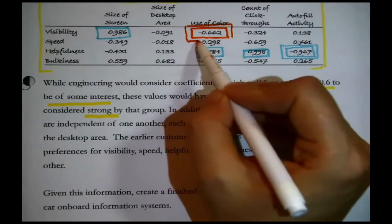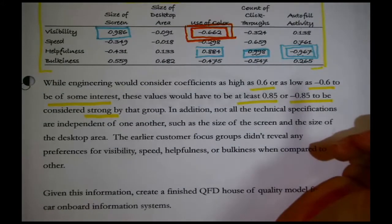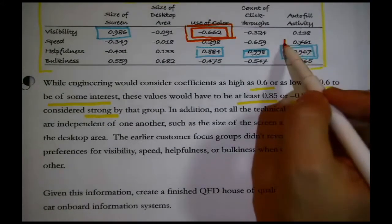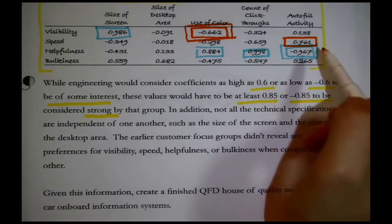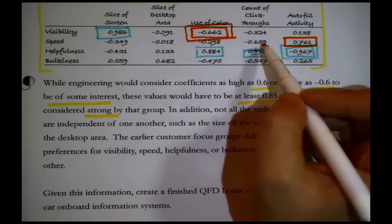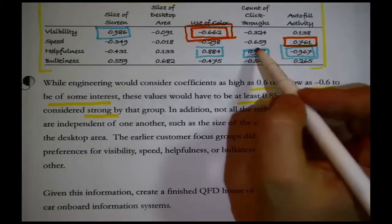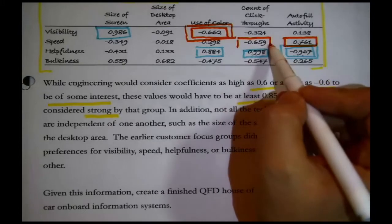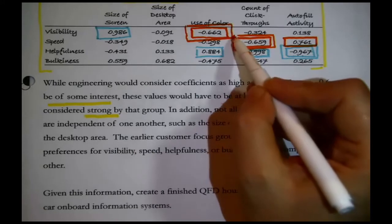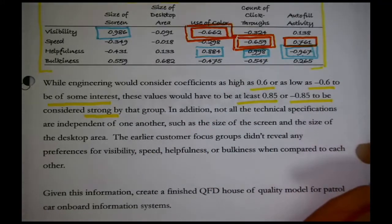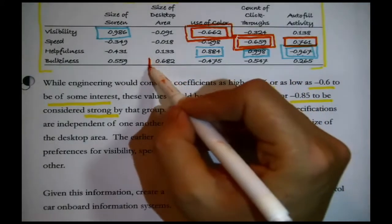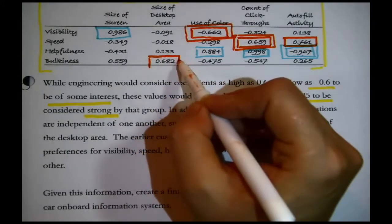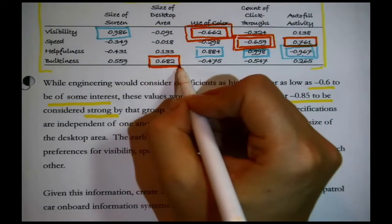I'll put like two boxes around it, meaning they work in opposite directions. Here is some correlation, positive correlation of interest. Didn't quite hit 0.85. Here it looks like we're below a negative 0.6 right here. It's negative. So I'll keep with my style, put two boxes around it. Does anybody else qualify as being of some interest? Oh, yes. Right here. Bulkiness and the size of the desk area comes in above 0.6.